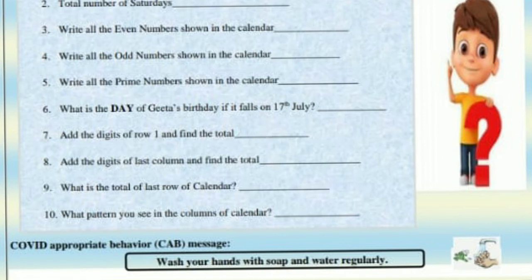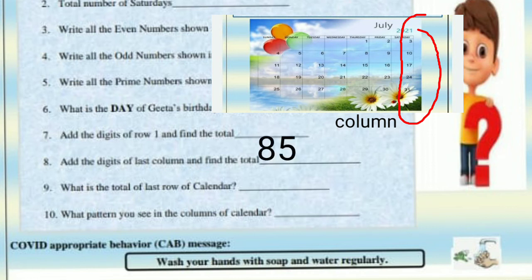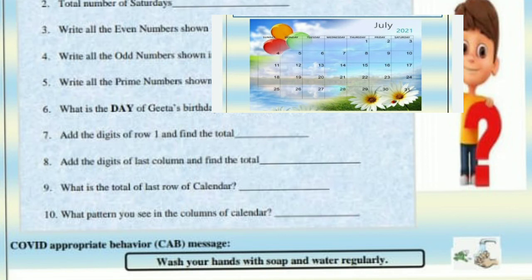Eighth: add the digits of the last column and find the total. The last column numbers are 3, 10, 17, 24, and 31. The total will be 85. So we write 85.